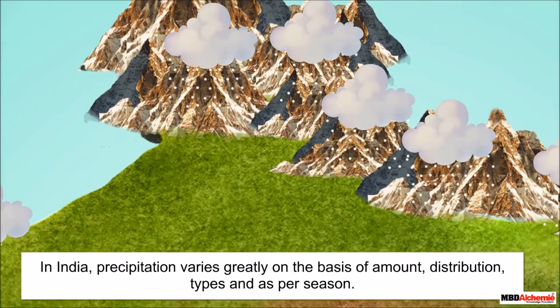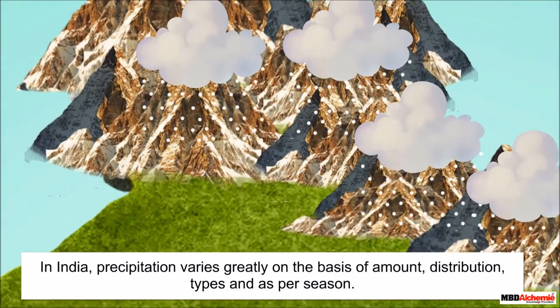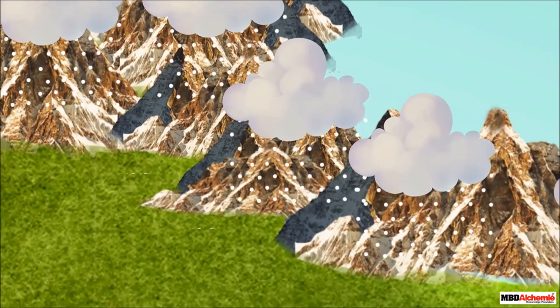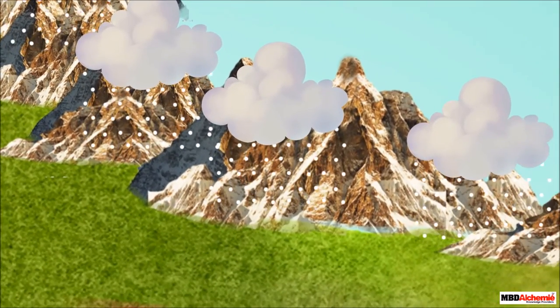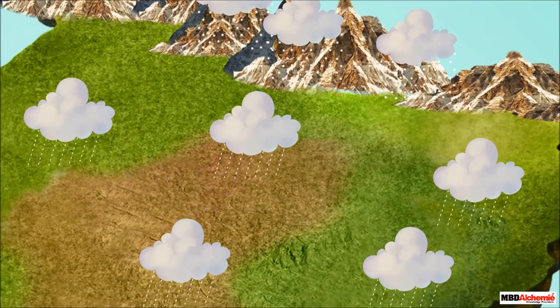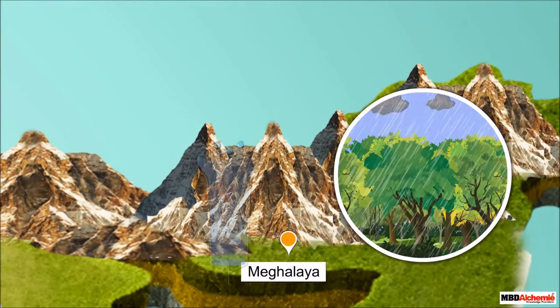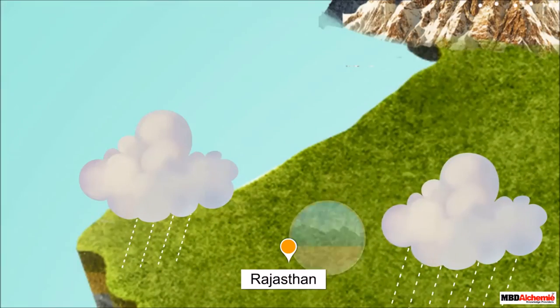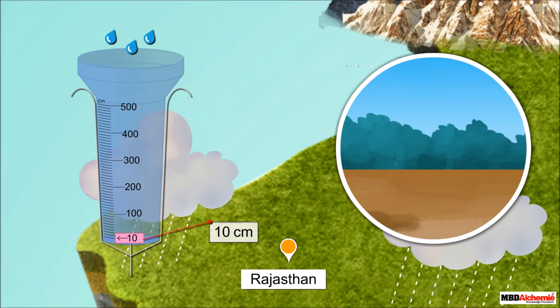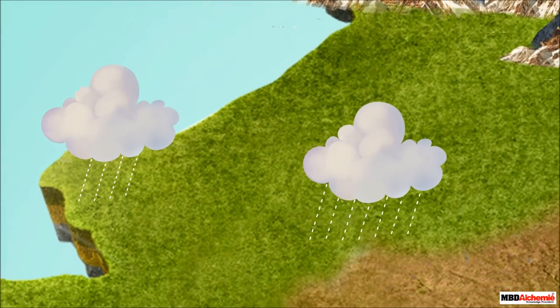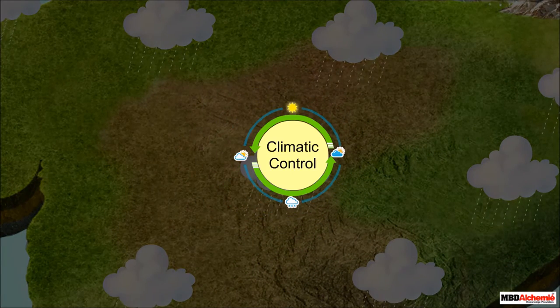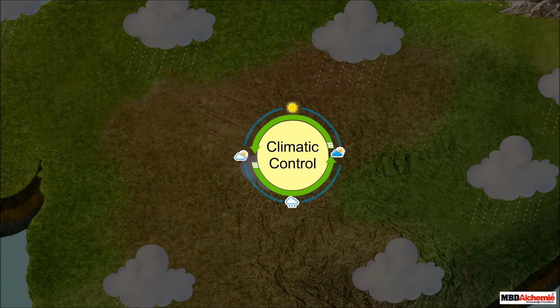If we want to examine the precipitation variation in India, it not only varies in amount and distribution but also in types and as per seasons. For example, the type of precipitation in the high mountainous regions of Himalayas is always in the form of snowfall. On the other hand rain falls in the rest of India during the rainy season. Meghalaya receives over 400 centimeters of rainfall and in Rajasthan it amounts less than 10 centimeters. It is interesting to know the factors that control the variation of temperature and precipitation of any place.